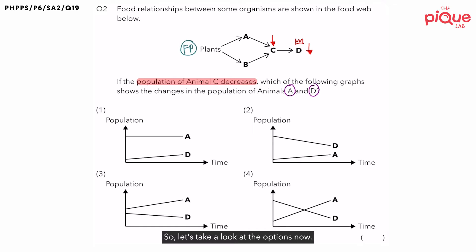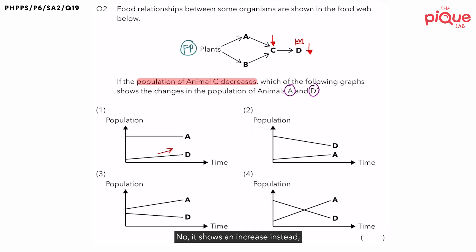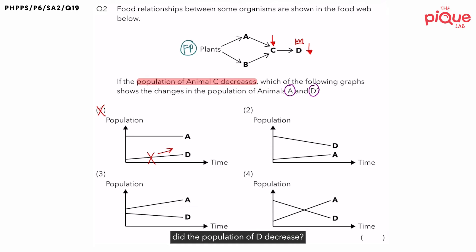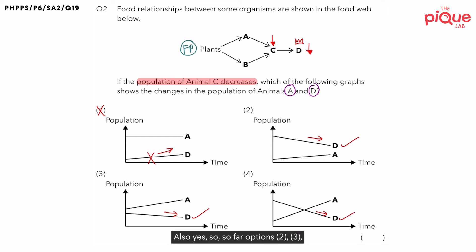Let's take a look at the options. For option one, did the population of D decrease? No, it shows an increase instead, so option one is definitely wrong. For option two, did the population of D decrease? Yes. What about three? Also yes. What about four? Also yes. So far, options two, three, and four are possible.